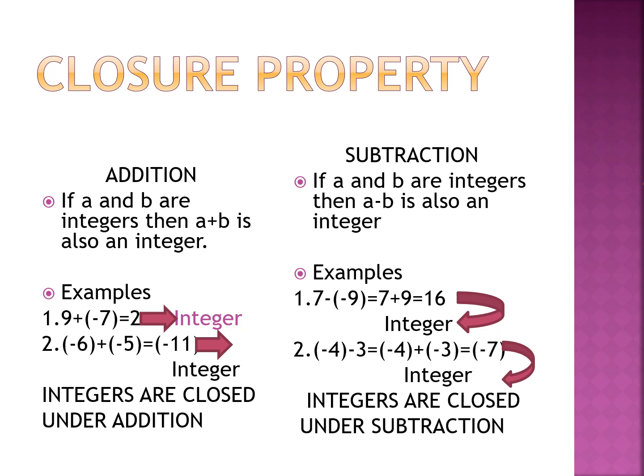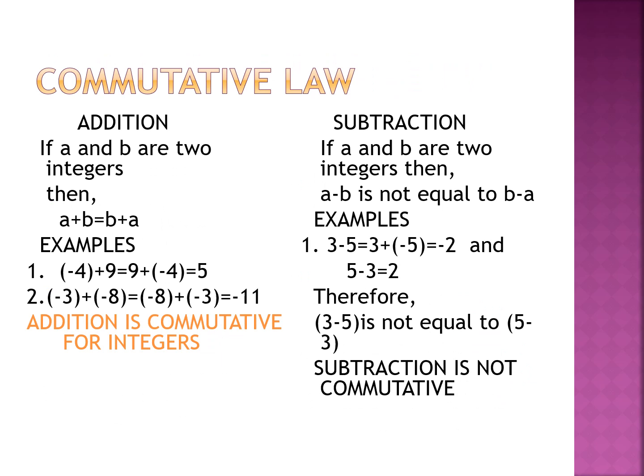Now we'll talk about the closure property of subtraction. If a and b are integers, then a minus b is always an integer — that means the difference is also an integer. For example, 7 minus (−9) equals 7 plus 9, which equals 16. And (−4) minus 3 equals (−4) plus (−3) equals −7. In both cases the difference is an integer, so integers are closed under subtraction.